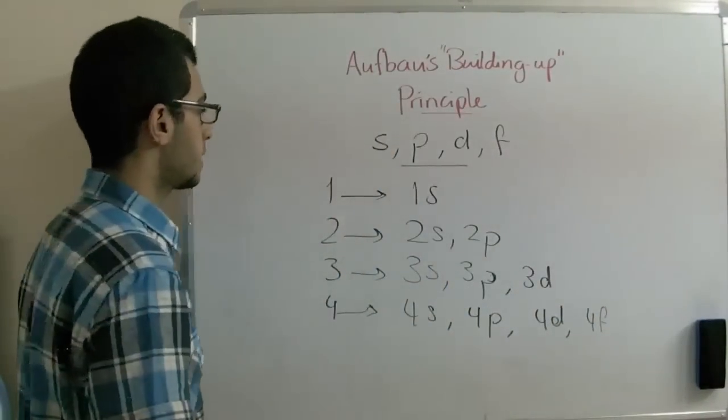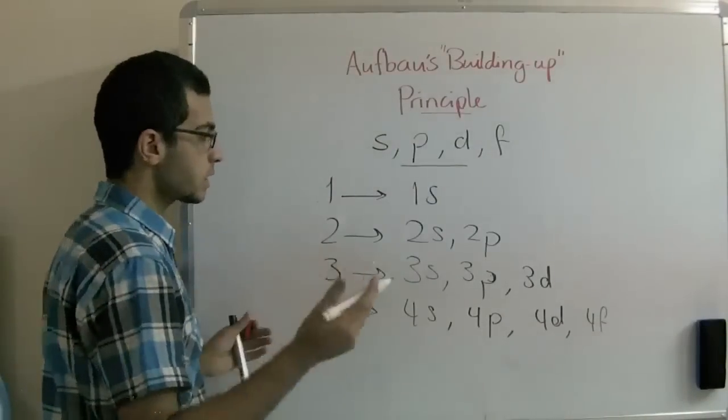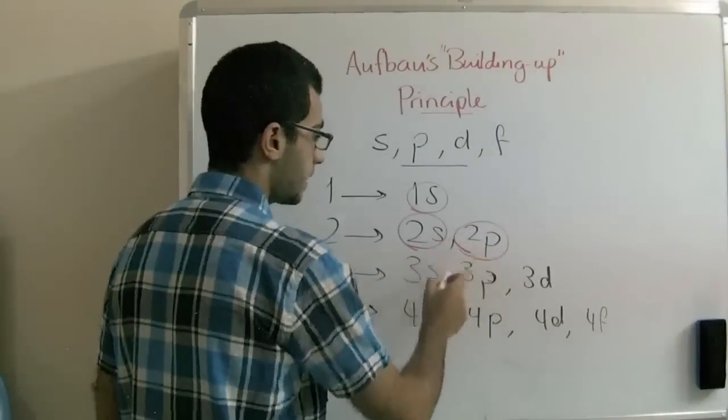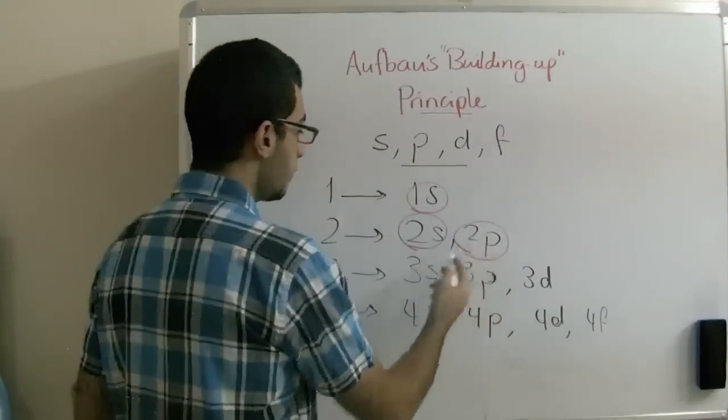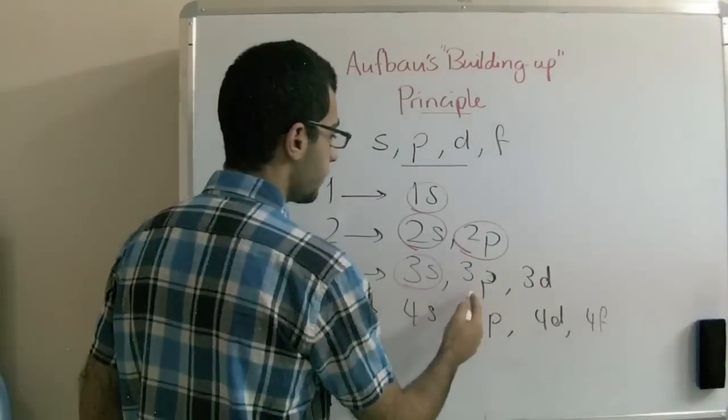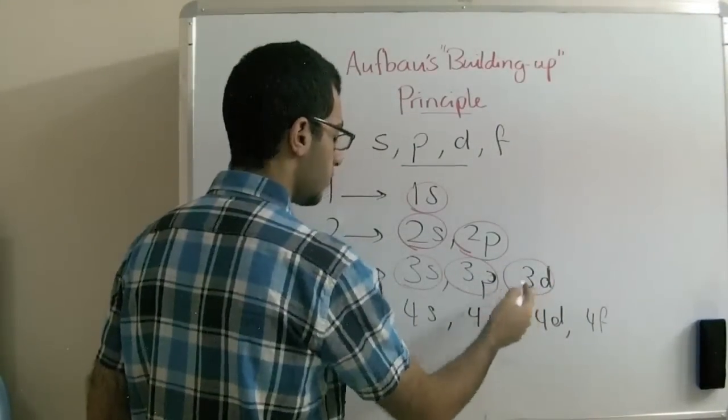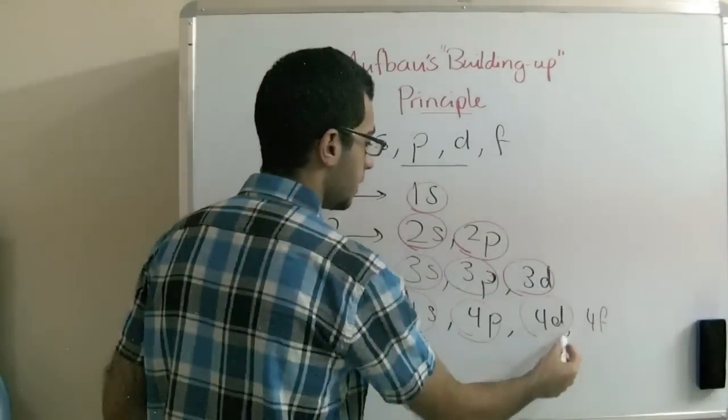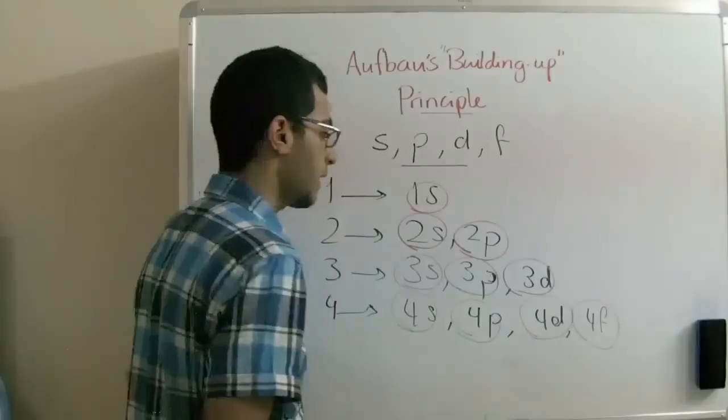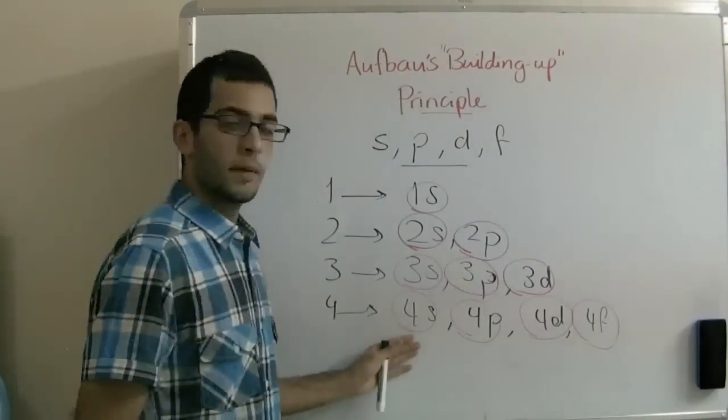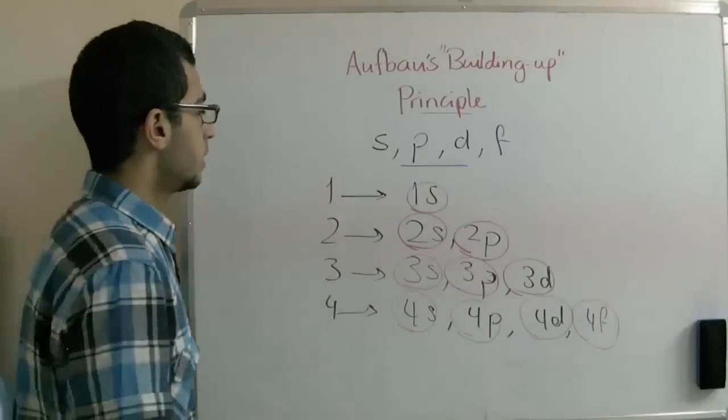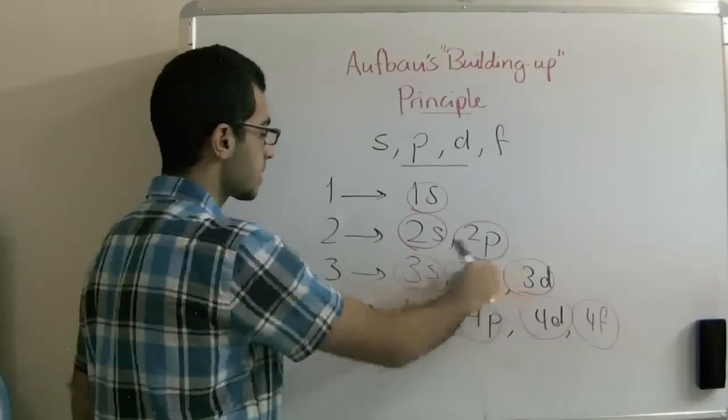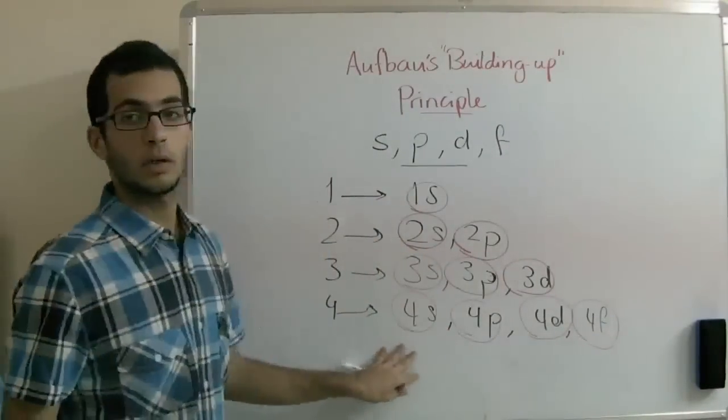Somebody may say that of course the 1s is less than the 2s, and the 2s is less than the 2p in energy. And then the 2p is less than the 3s, the 3s is less than the 3p, less than the 3d, and the 3d is less than the 4s, less than the 4p, less than the 4d, less than the 4f, because the numbers here appear to be like that. So that the 1 is less than the 2, and all the 2s are less than the 3s, the 3s are less than the 4th, and so on. This is not correct.